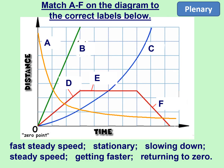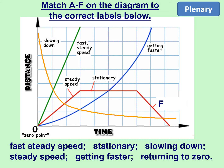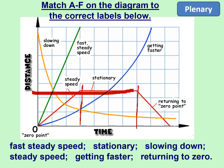Here are six objects A to F, each covering a certain distance over a given time. Match the statements to the motion. Object A is slowing down; object B is at a fast steady speed; object C is getting faster — it's accelerating; object D is moving at a steady but lower speed than B; object E is stationary — a flat line on a distance-time graph means the object is not moving; object F is returning to its starting point, same gradient but opposite direction.